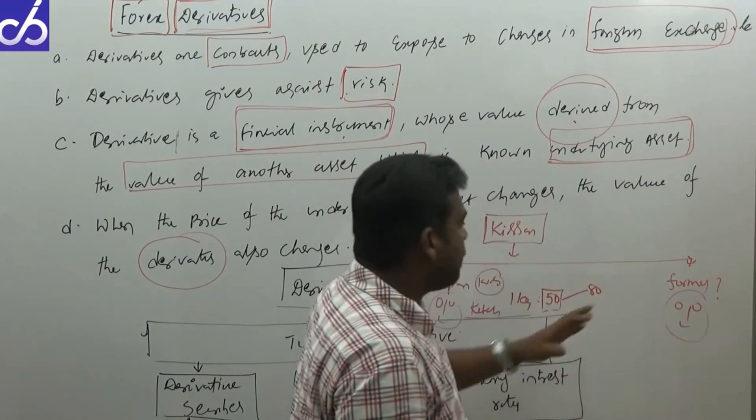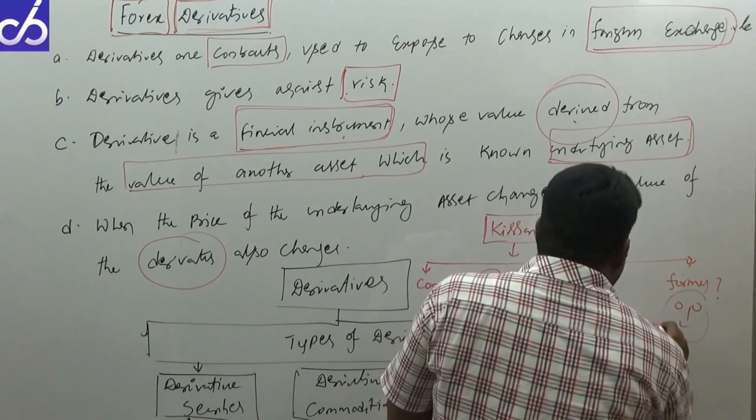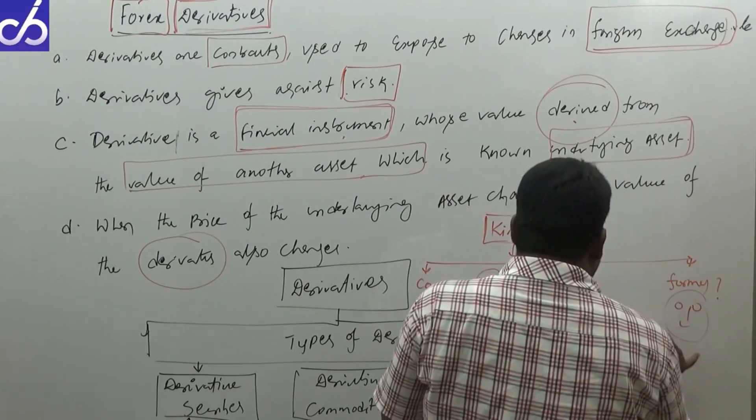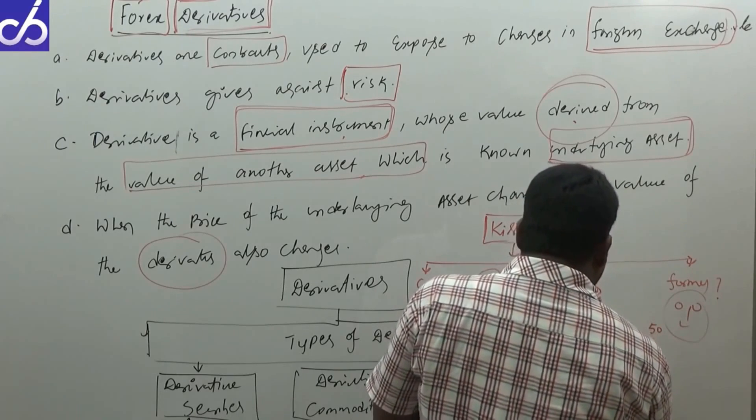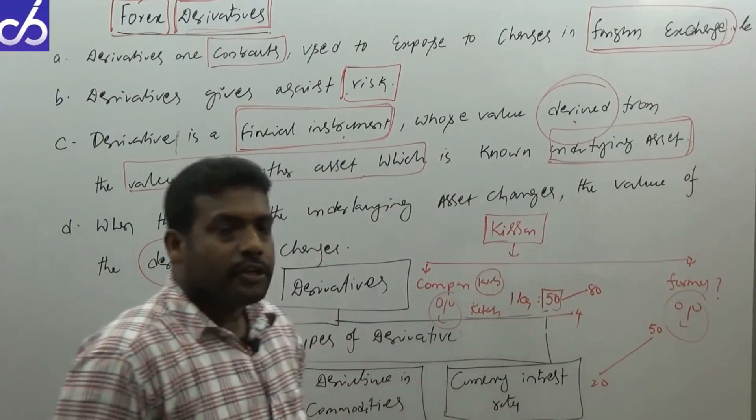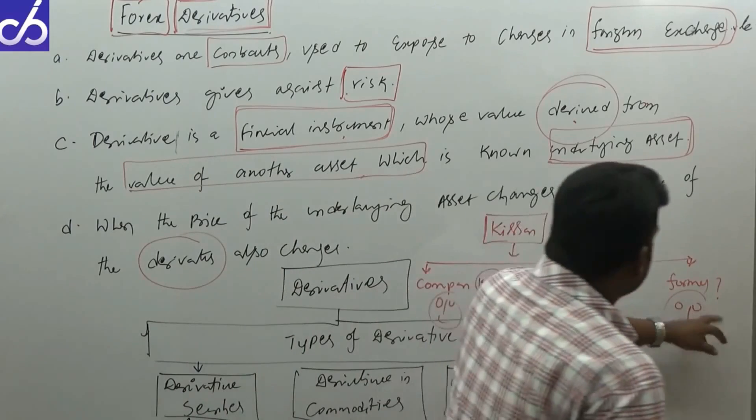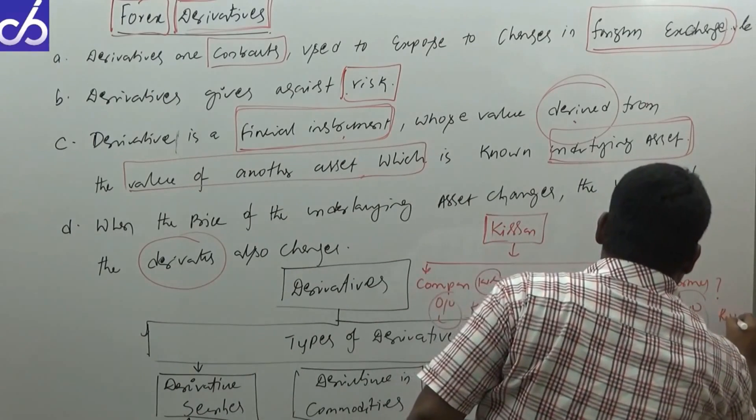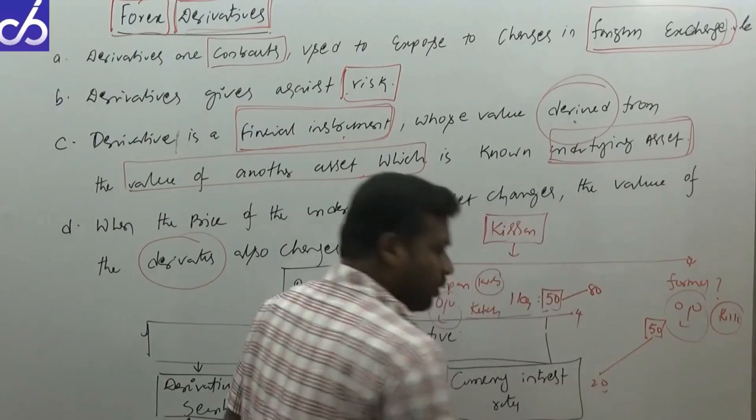From the farmer's side, the person who is producing is thinking that after four months the value is going to come down to 20 rupees. He also has a risk, expecting that the value of tomatoes is going to come down.